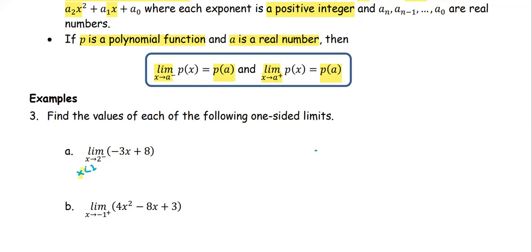Where part B, x approaching negative 1 from the positive side, or the x value going to be slightly greater than negative 1.